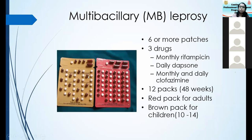Clofazimine is used for multi-bacillary leprosy — 12 packs of the MB treatment are given. The red pack is for adults, the brown for children. Monthly rifampicin, a high dose of clofazimine, and a daily dose of dapsone and clofazimine. Clofazimine is currently used only for the treatment of leprosy, so many of you may not have heard of it.